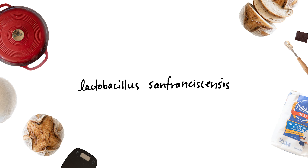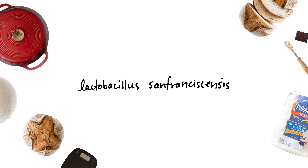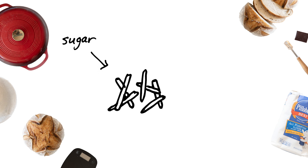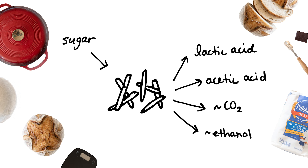A common species, of the more than 50 species that scientists have found present in different starters from all over the world, is Lactobacillus sanfranciscensis. These bacteria feed on sugar and produce lactic acid, acetic acid, a bit of CO2, and sometimes ethanol. This acidic environment is what's responsible for the slight tartness of sourdough, and is also what keeps bad bacteria from spoiling the dough while it's fermenting.